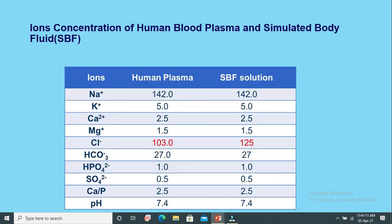To assess the in vitro bioactivity of samples, we synthesize a simulated body fluid (SBF) whose ionic concentration is similar to human blood plasma. This table represents the ions present in human blood plasma as well as the SBF solution synthesized in the lab, which has a similar ionic concentration except for the chloride ions.